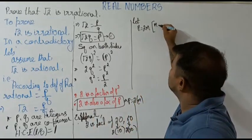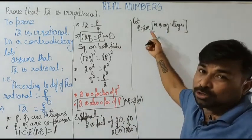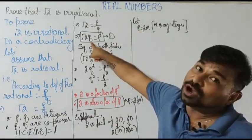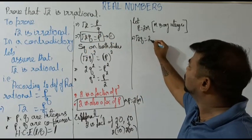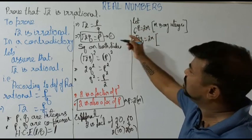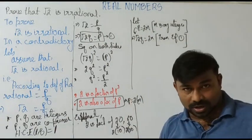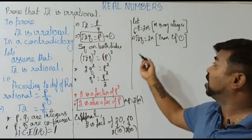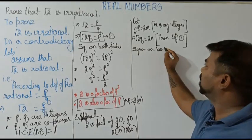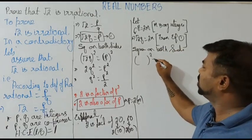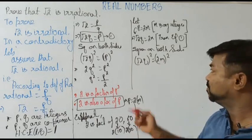I am taking some variable m. So p = 2m, where m is any integer. Now from equation 1 we can substitute: in the place of p we write root 2 × q = 2m. Squaring on both sides: (root 2 × q)² = (2m)².